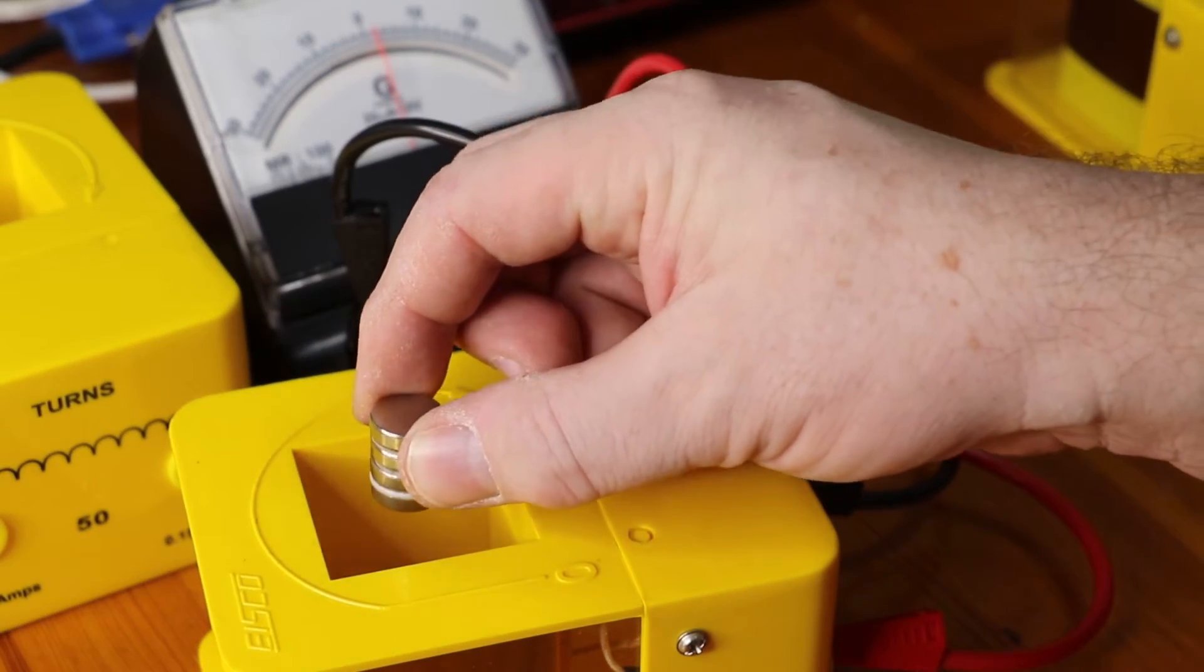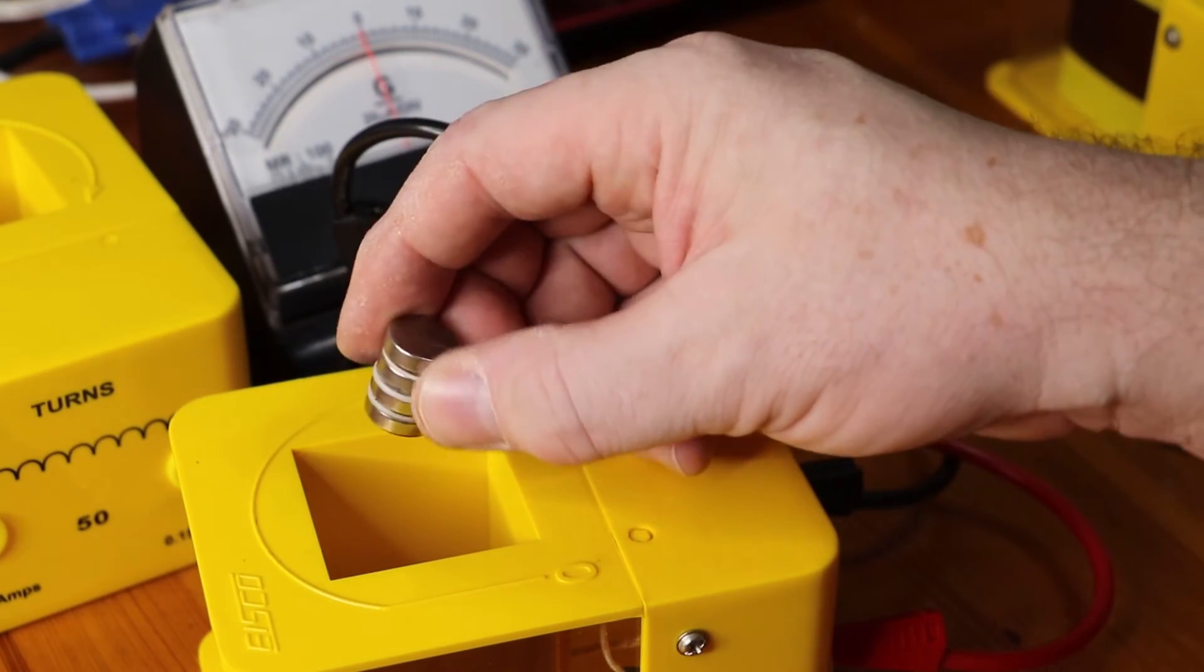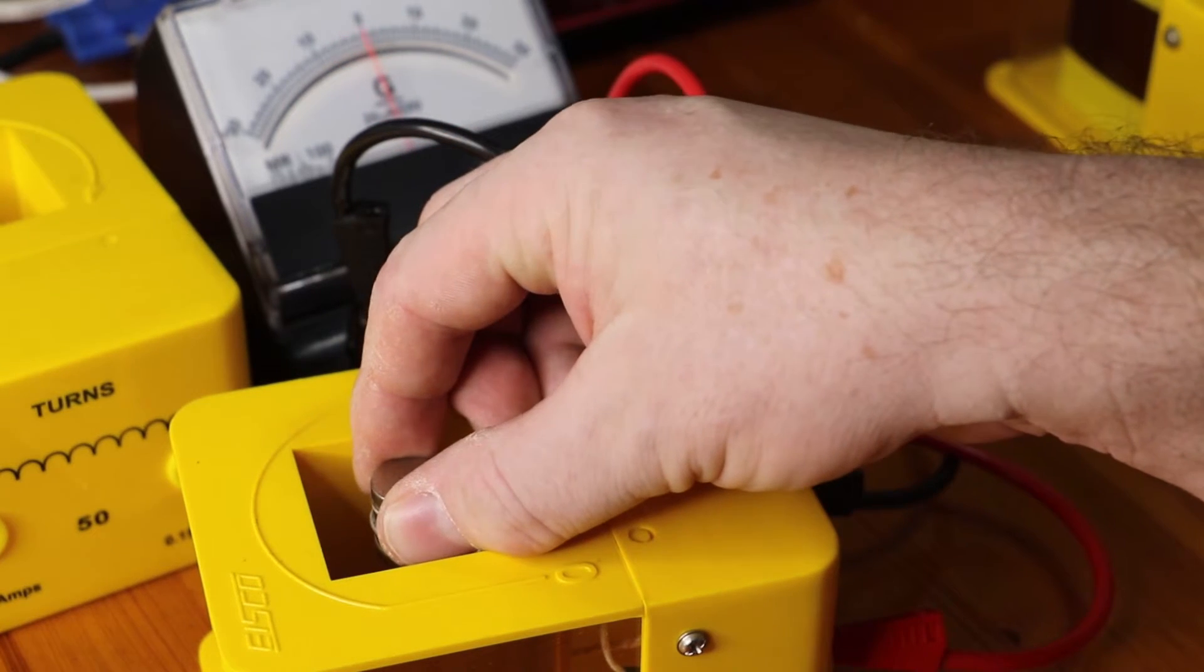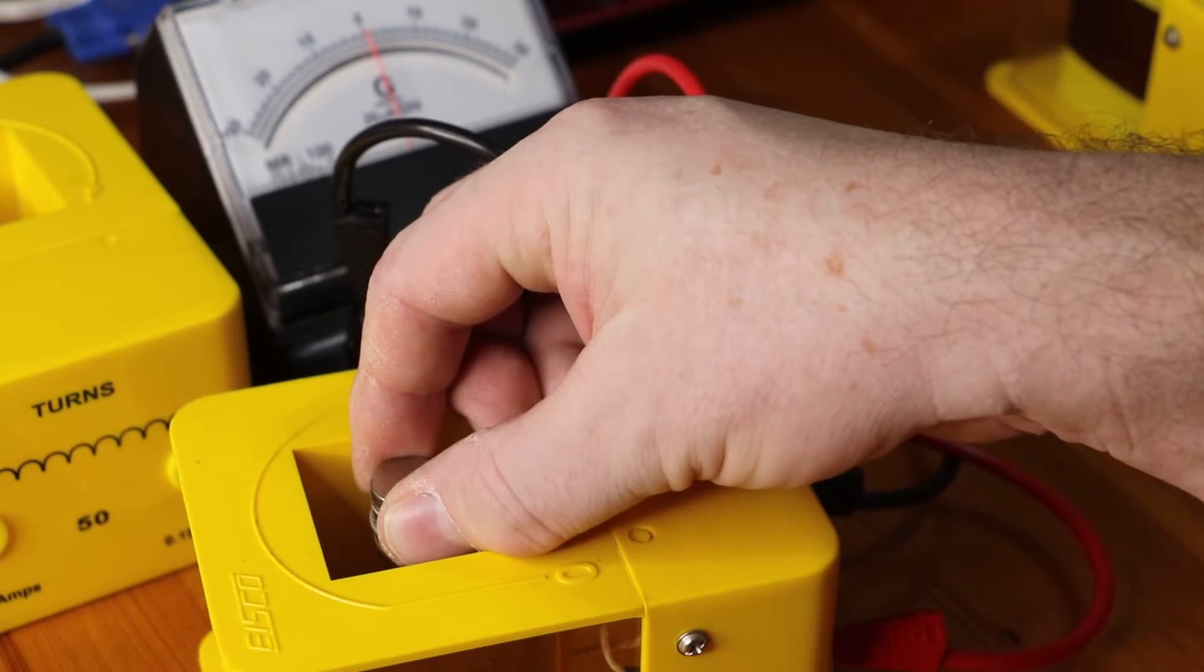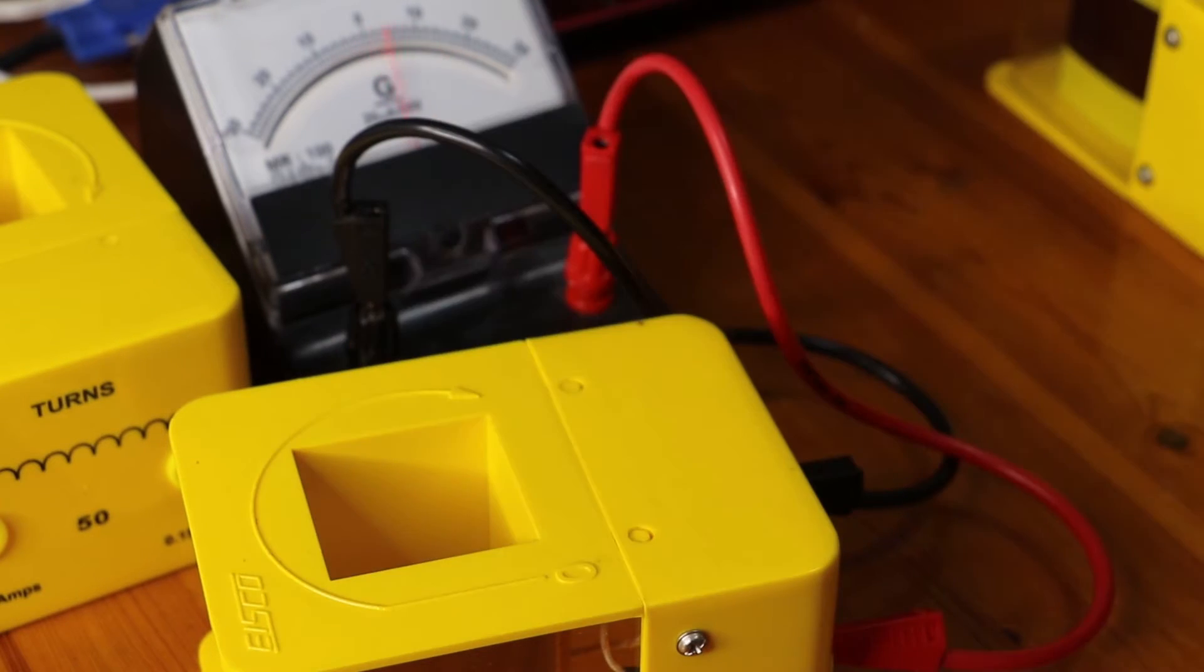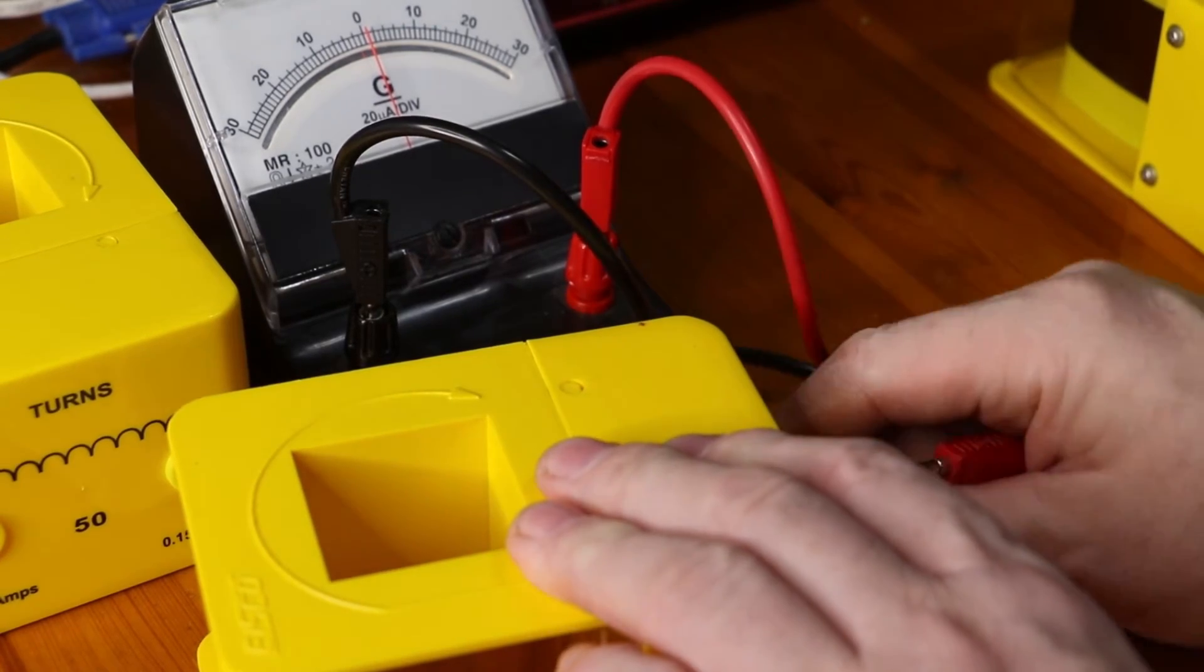So the magnet here makes a difference with the speed and it makes a difference with the polarity. When it's still in the coil nothing happens, but when it's moved we get a deflection. That was a 500-turn coil.